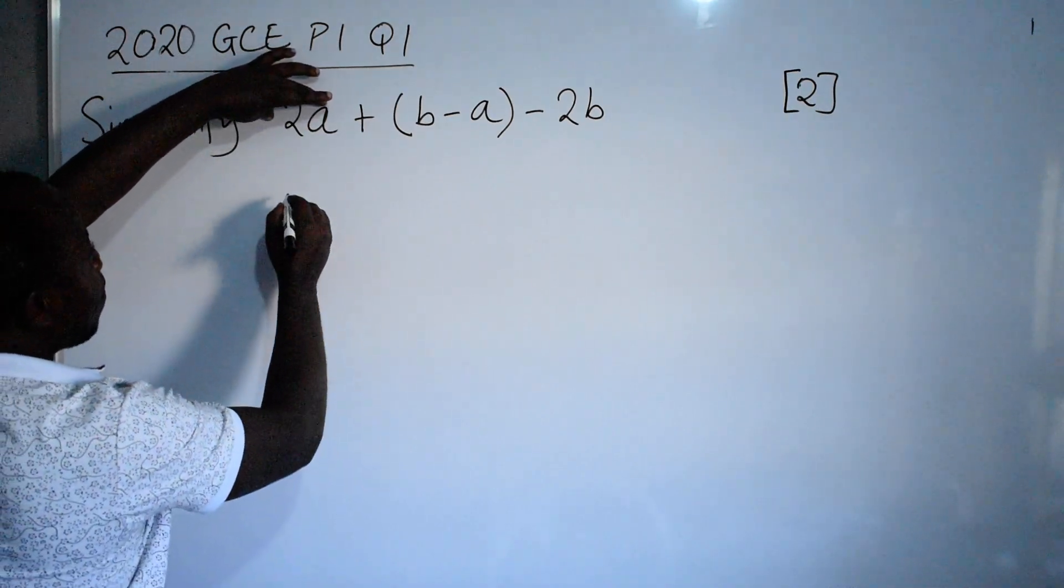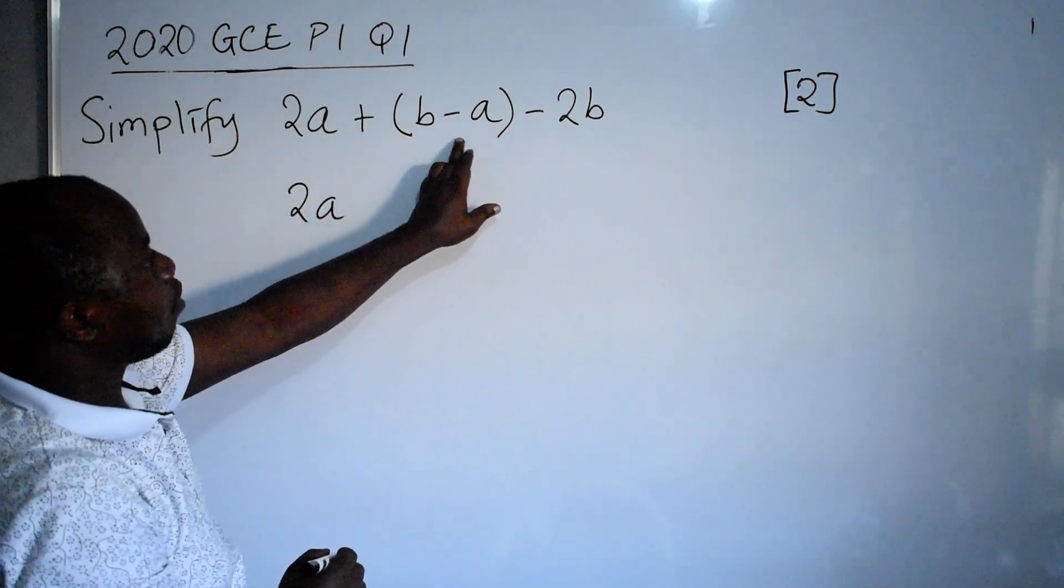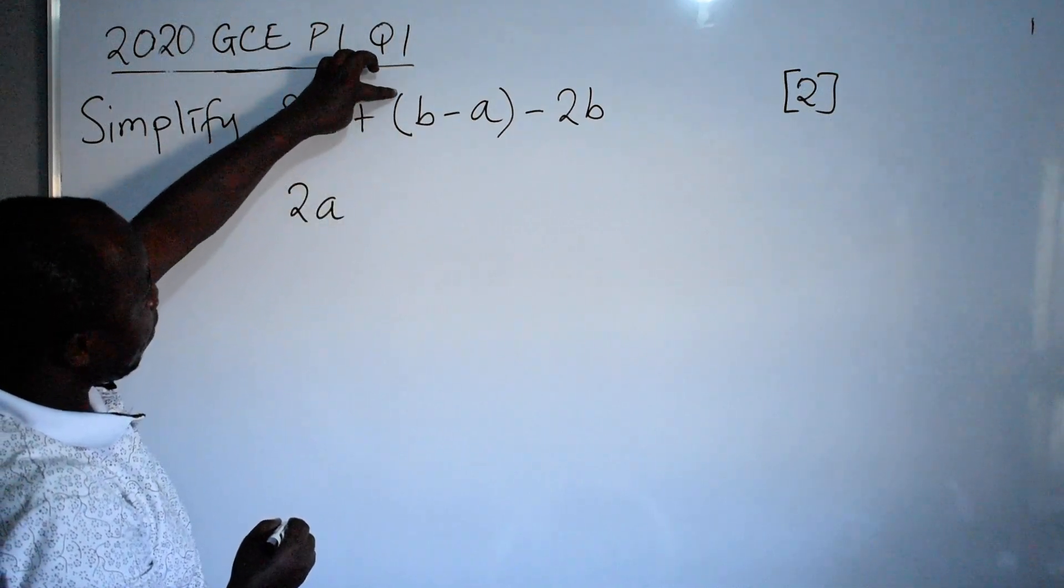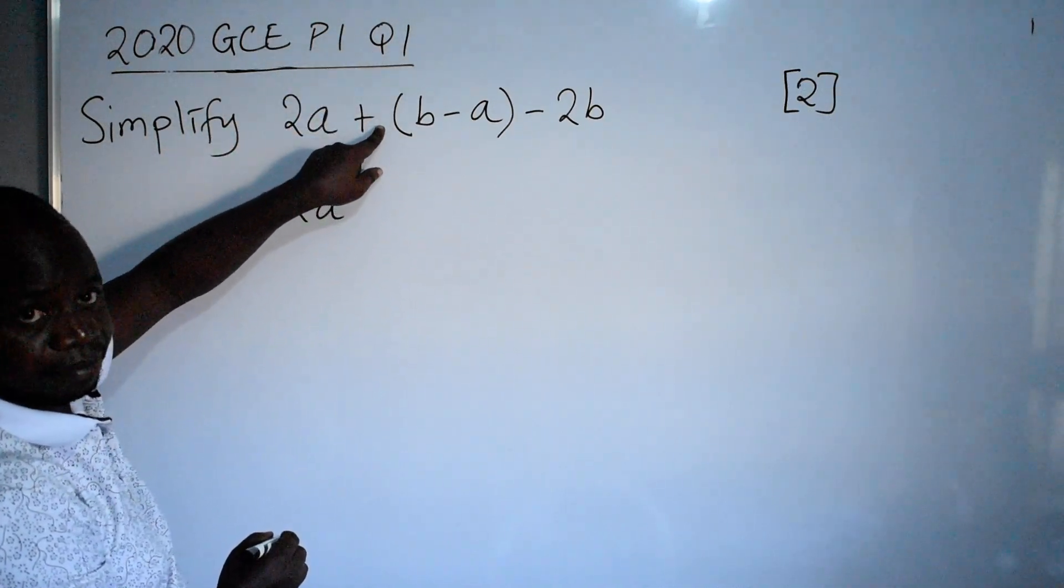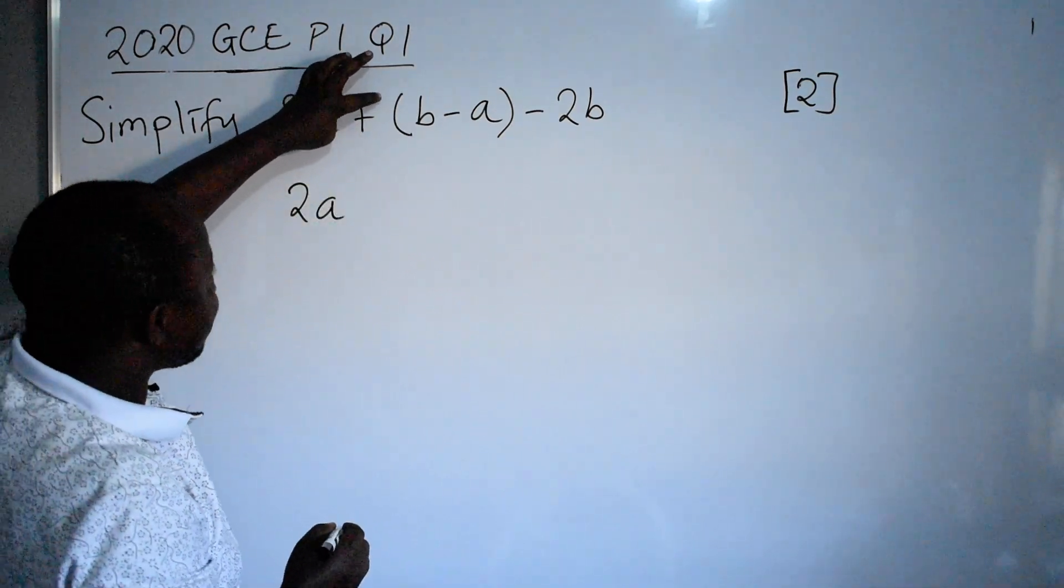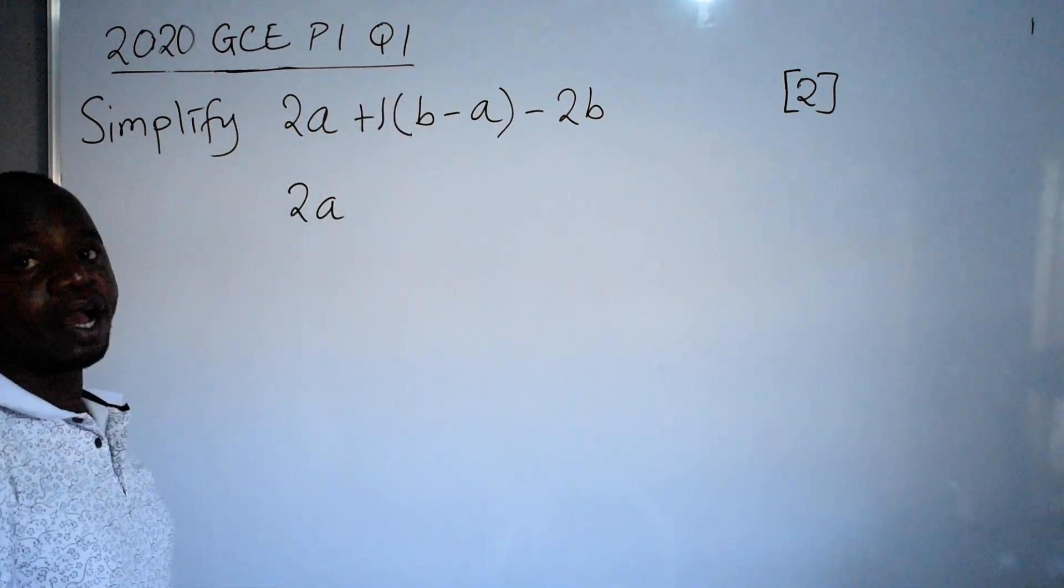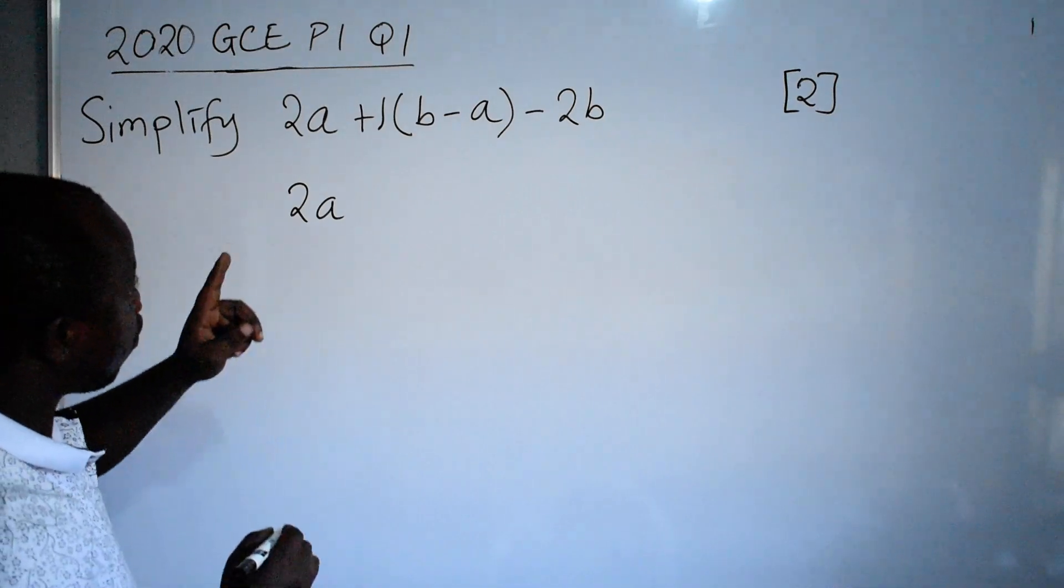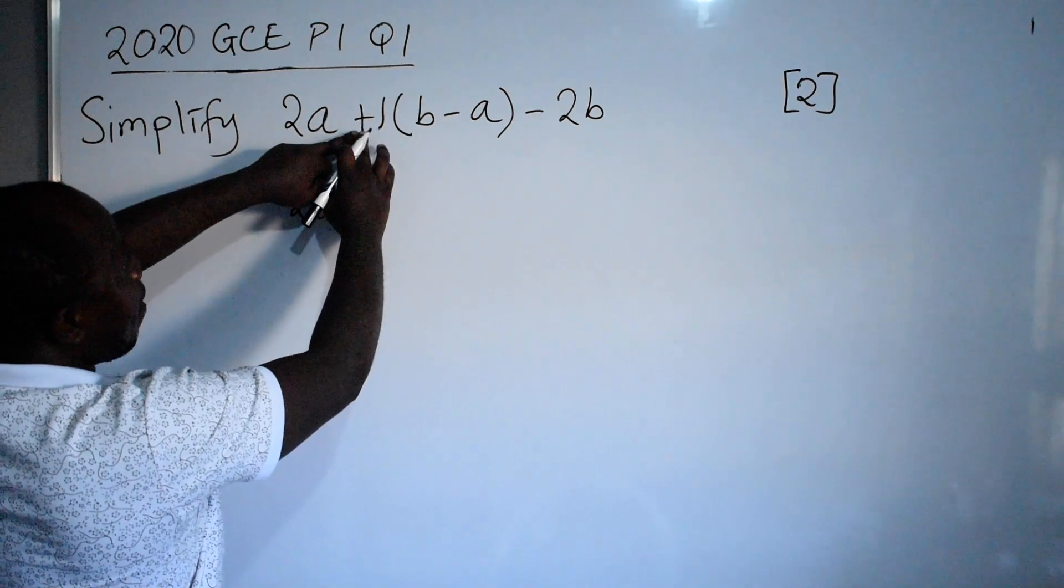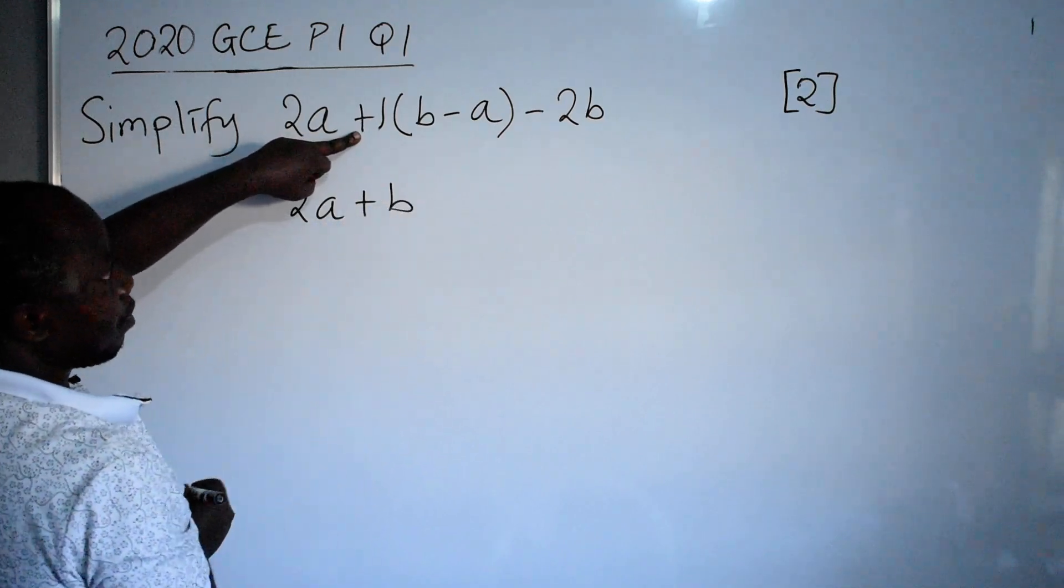So this side you are going to copy the way it is, 2a. Then we have plus in brackets. See how do we get rid of the brackets? Just outside the opening bracket here there is no number that we need to multiply with. So what you need to do is, if there is nothing, if there is no number, just know that there is a 1. So you start multiplying by 1. So we are now going to say positive 1 here times b, this will give us plus b.